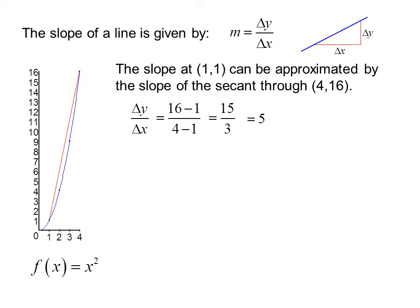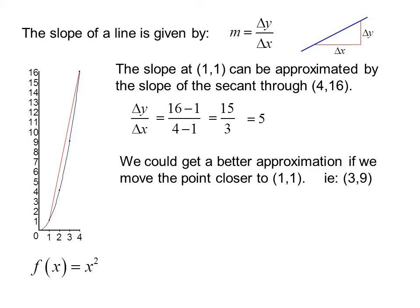This gives us the approximate slope at this point, but it's not a very good approximation because the slope of the red line is not very close to the slope of the curve at that point. We could get a better approximation if we move the point closer to (1,1), for example (3,9).